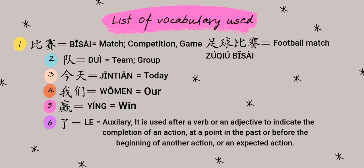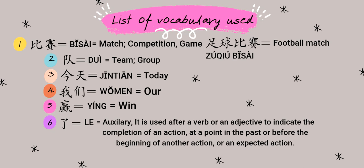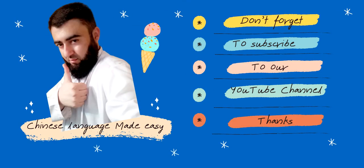I hope that was enough for today and you have learned the words yíng and shū. You can use shū the same way: 我们队今天输了比赛 — 'Our team lost the match today.' That's all for today. If you liked the video, please subscribe to our YouTube channel and share it with friends eager to learn Chinese. See you in the next video. Zàijiàn!